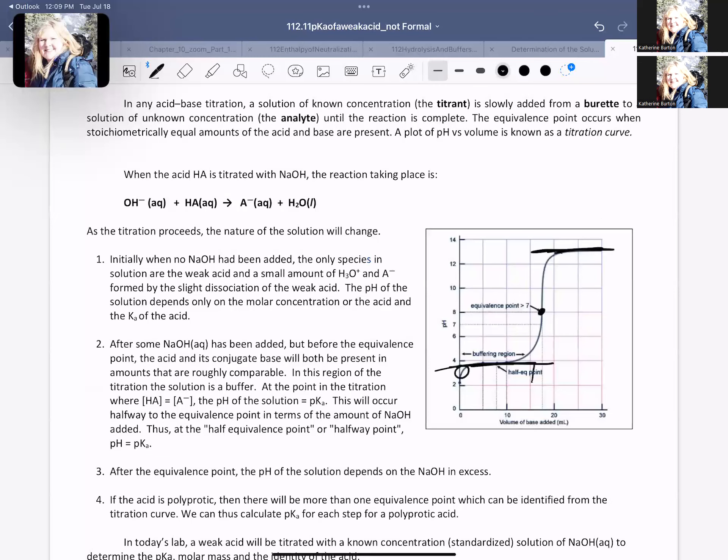The equivalence point by definition is the point where the moles of the acid is equal to the moles of the base added. Remember, you are adding in here a strong base as you titrate, and that is going to be really useful because if those two are equal, then this is going to tell us that if we know how many grams of acid we have...